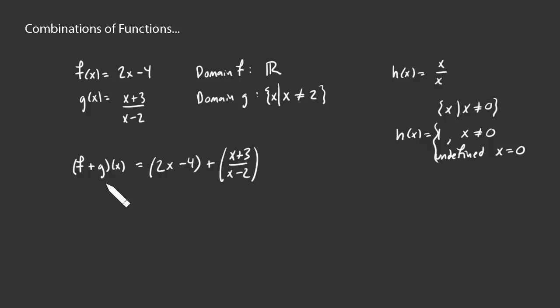So getting back to this function here where we're adding f and g, and I look at this, and I haven't simplified anything yet, what's the domain? Well, the only thing that could go wrong is if I divide by 0. And of course, I'm only going to divide by 0 if x equals 2. And so the domain here is the set of all x where x is not equal to 2.